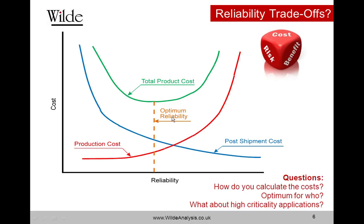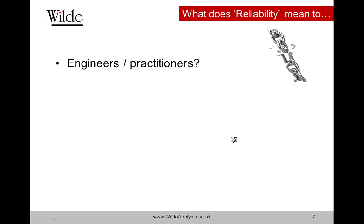This optimum reliability — it's an optimum for who? And what about high criticality applications? These are scenarios where a product is used in a situation where the effect or severity of a failure is so high that we don't really want to contemplate it. So it's a good principle to explain the need for high reliability products and the trade-offs involved, but it isn't necessarily the whole picture.